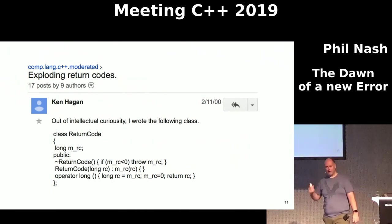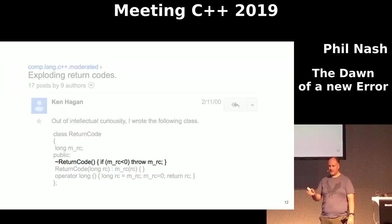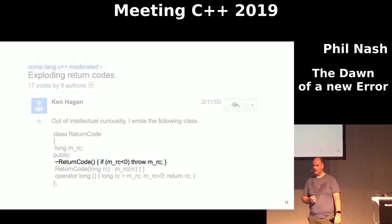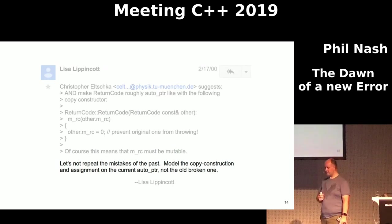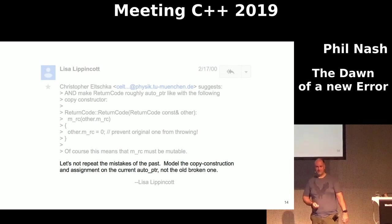I dug a little bit more and found this wasn't even the first time this was proposed — there was a post from comp.lang.c++ moderated in the year 2000. It references even earlier work by Lisa Lippincott and, separately, James Cans. Interestingly, Lisa actually popped up in that thread, and there's this quote about not repeating the mistakes of the past regarding copy construction and auto pointer, which really emphasizes that these were very different times. A lot of these techniques haven't survived to today — they seem a bit odd looking back.